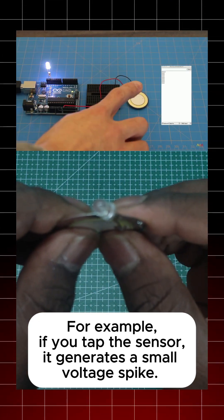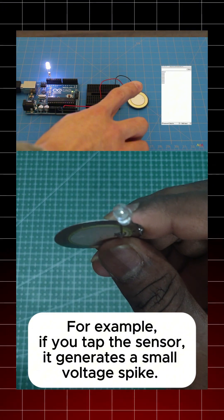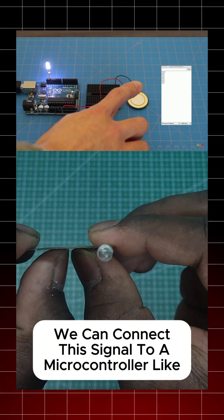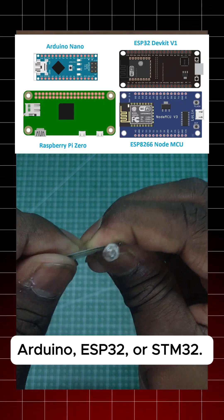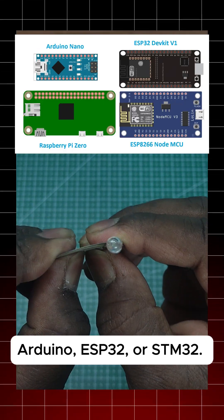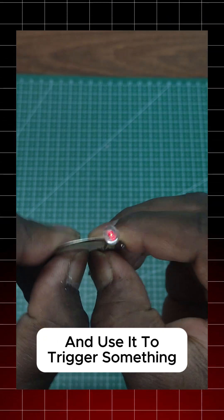For example, if you tap the sensor, it generates a small voltage spike. We can connect this signal to a microcontroller like Arduino, ESP32, or STM32, and use it to trigger something,